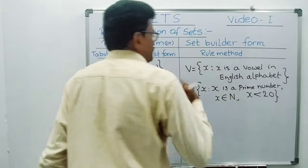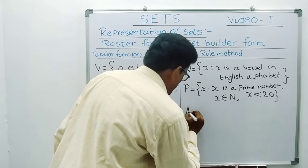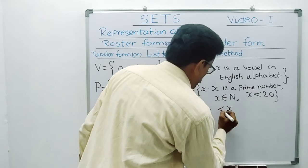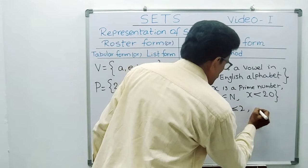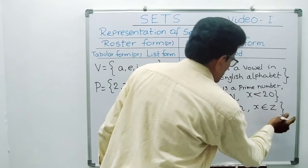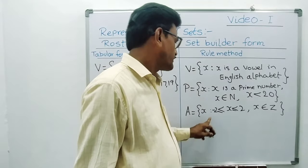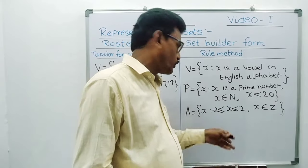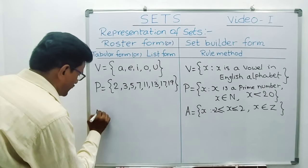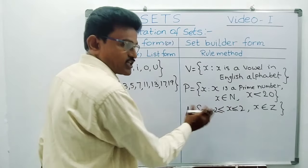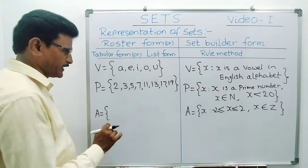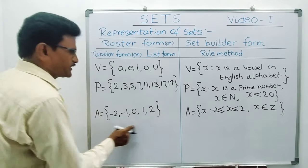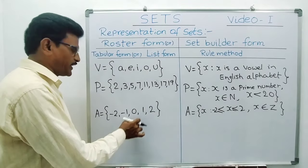Now I am writing a Set Builder form first: A = {x : x is an integer and −2 ≤ x ≤ 2}. This is the Set Builder form — x such that x belongs to the integer list, from minus 2 to plus 2, including minus 2 and plus 2. Now building the Roster form: A = {−2, −1, 0, 1, 2}. These are the elements that belong to this set. So from Set Builder form we can write it into Roster form.